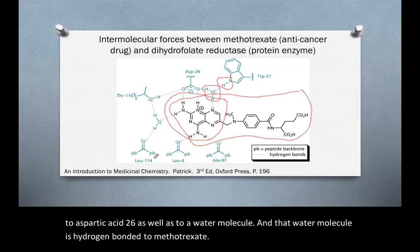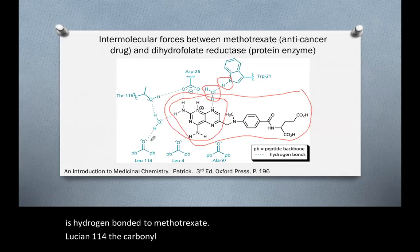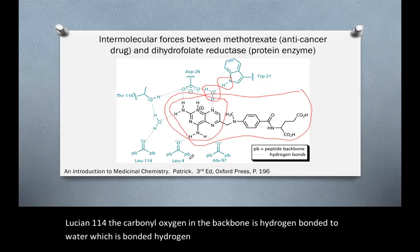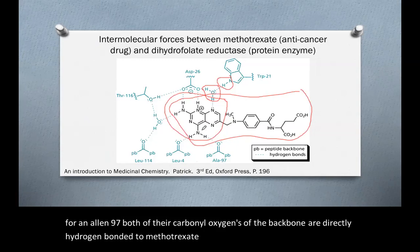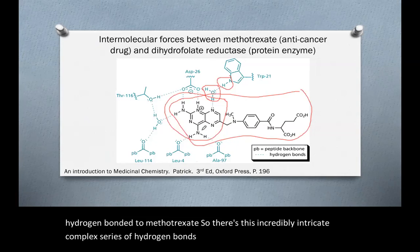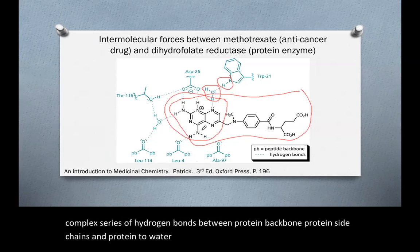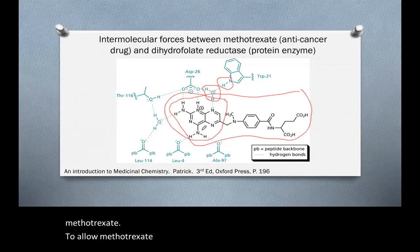Leucine-114's carbonyl oxygen in the backbone is hydrogen bonded to a water molecule, which is hydrogen bonded to methotrexate. Leucine-4 and alanine-97 both have their carbonyl oxygens of the backbone directly hydrogen bonded to methotrexate. So there's this incredibly intricate, complex series of hydrogen bonds between protein backbone, protein side chains, and protein-to-water molecules that then hydrogen bond to methotrexate, allowing it to bind in the active site of dihydrofolate reductase and inhibit it.